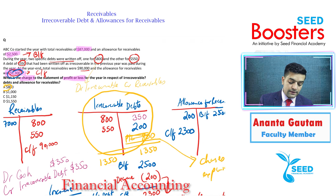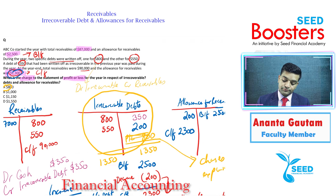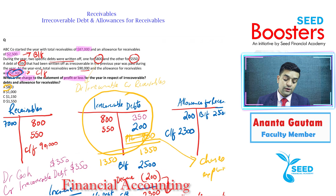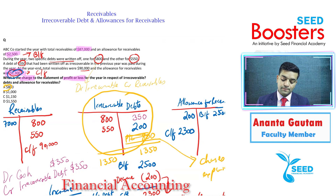That is the right answer. Hopefully this video has explained the concept and cleared any doubts regarding irrecoverable debts and allowance for receivables. Thank you.